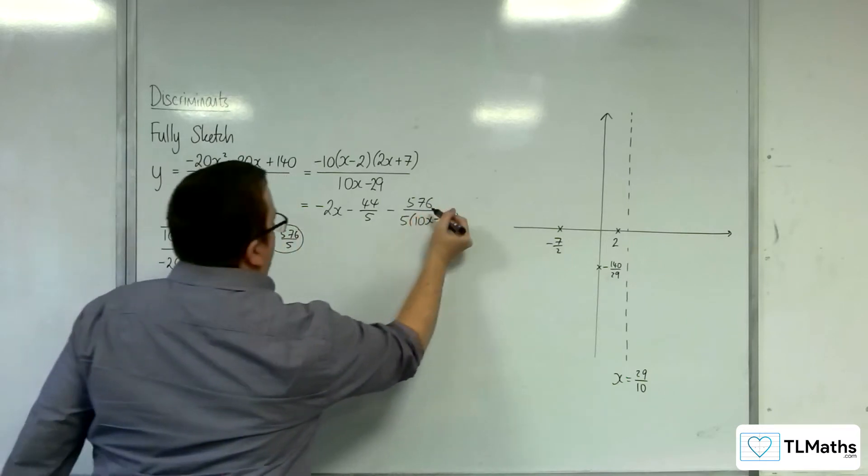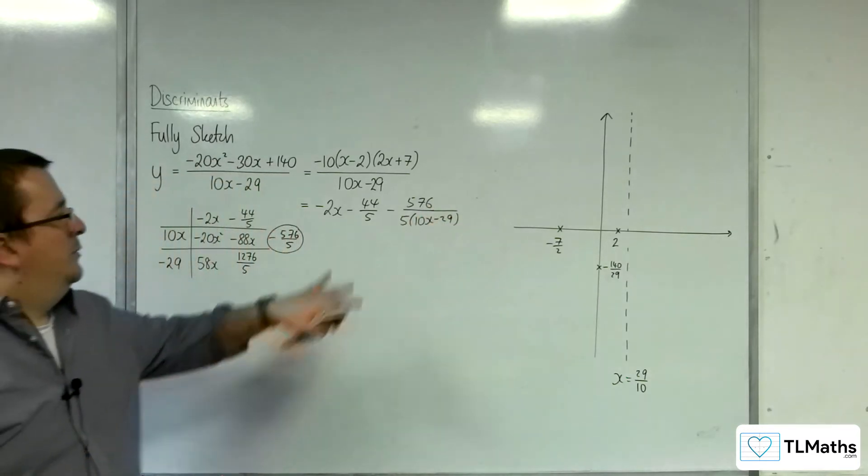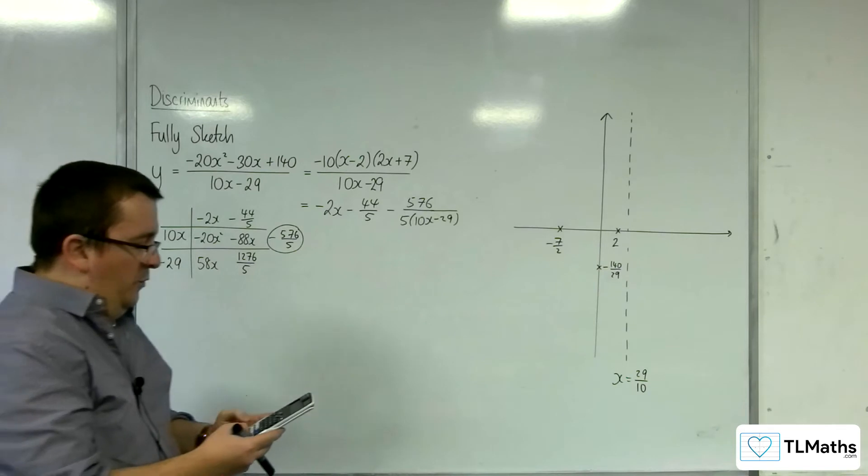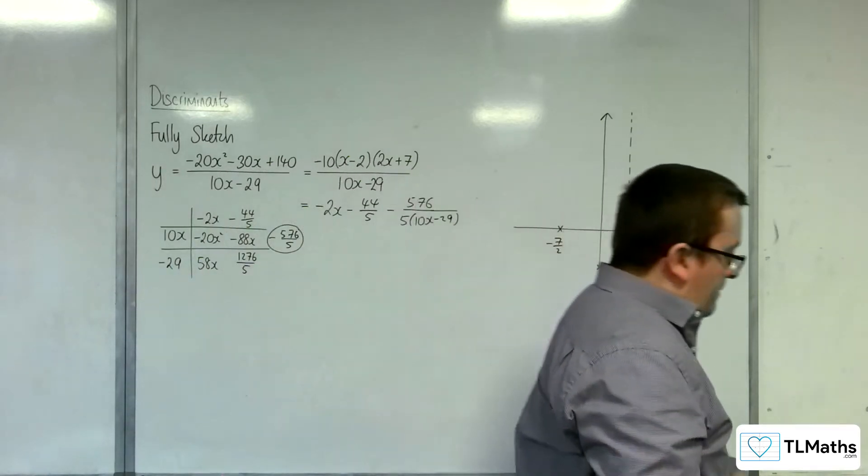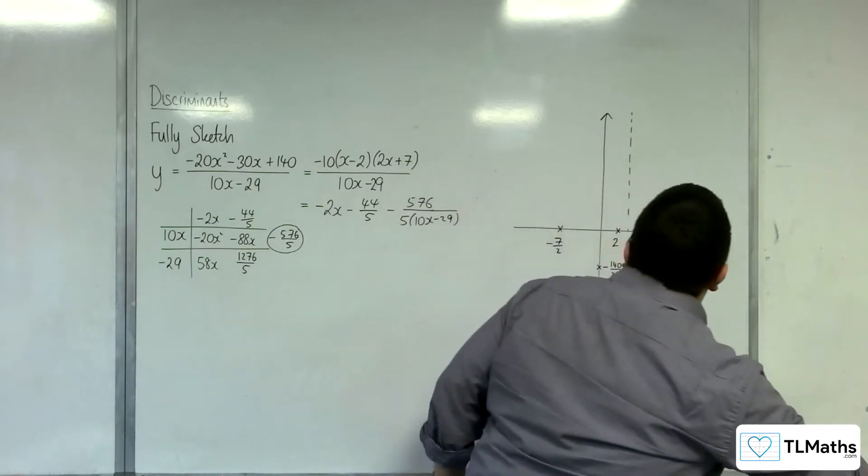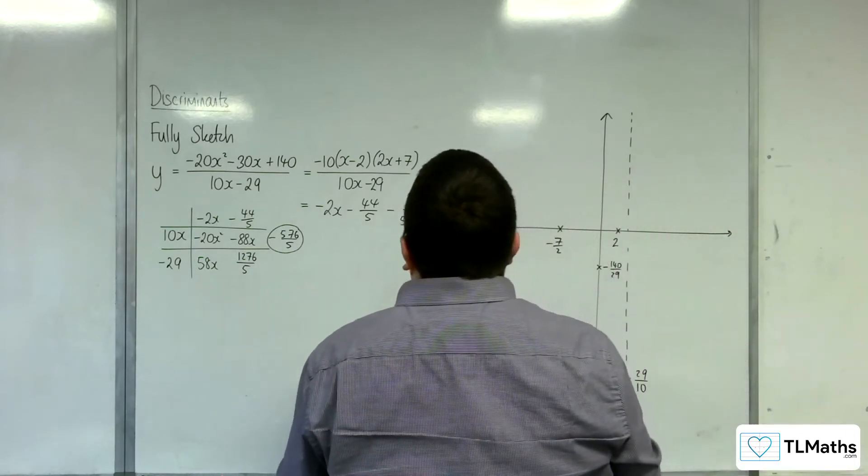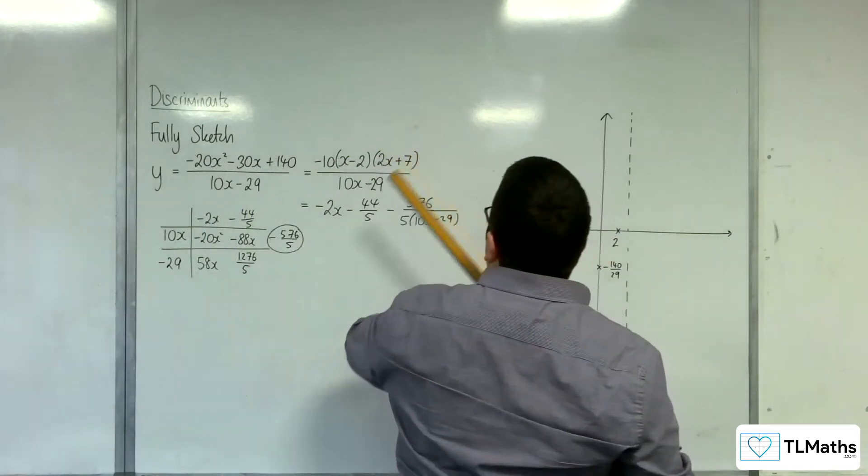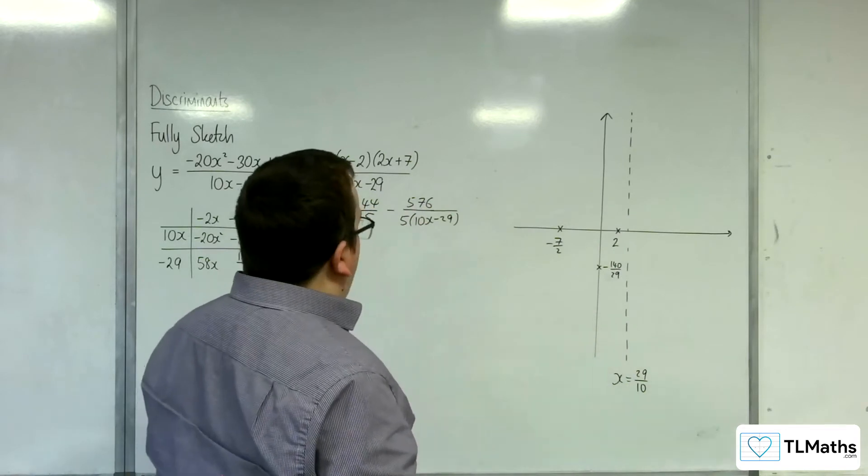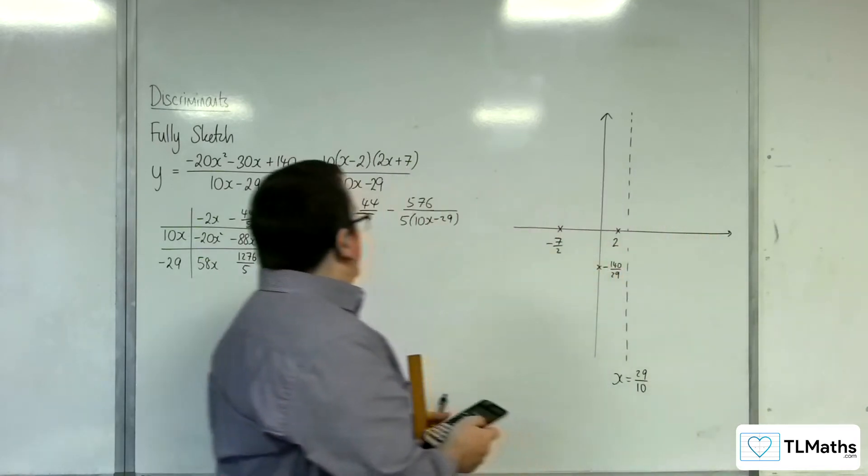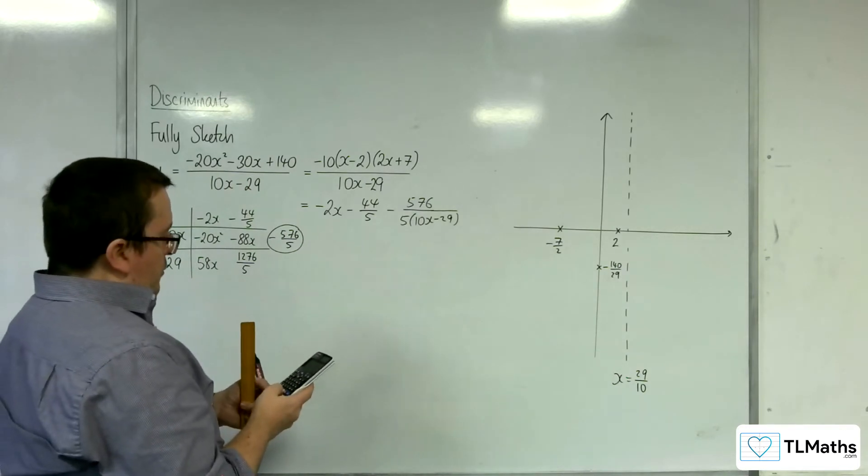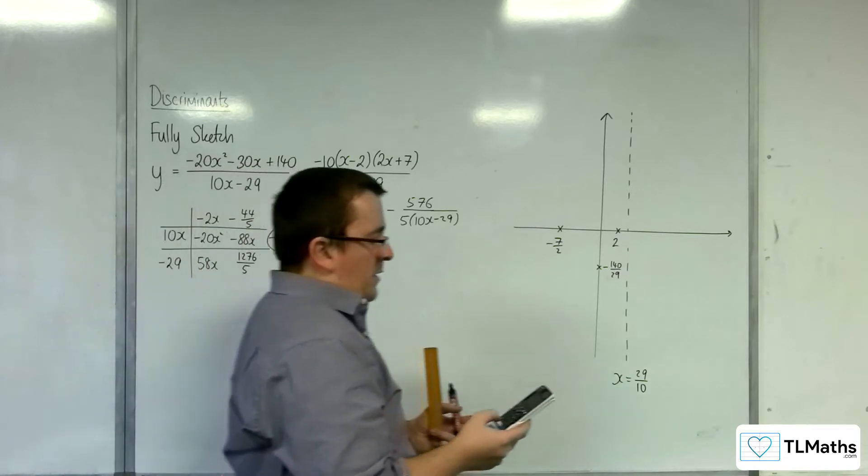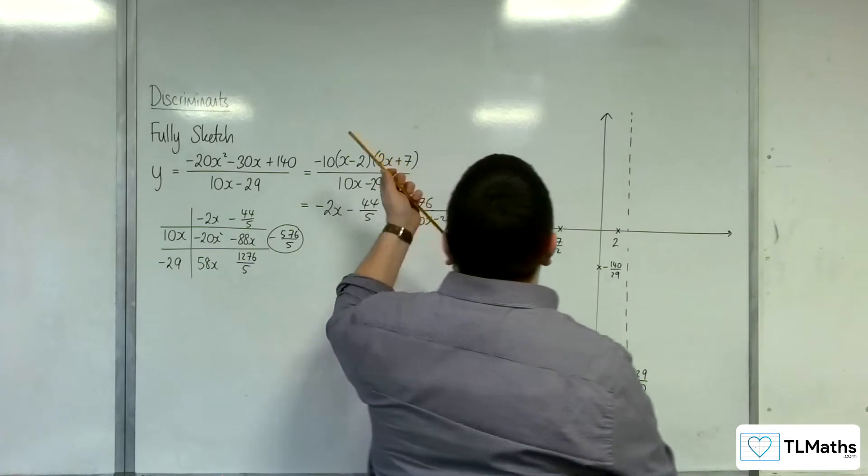So, that means that my oblique asymptote is at y equals minus 2x, take away 44 over 5. Now, 44 over 5 is 8.8. So, we are below this point here. So, whereabouts is that crossing the x-axis, actually? Got to be to the left of minus 7 halves. So, 44 over 5, and then divide by 2. So yeah, 4.4, minus 4.4. That's fine.